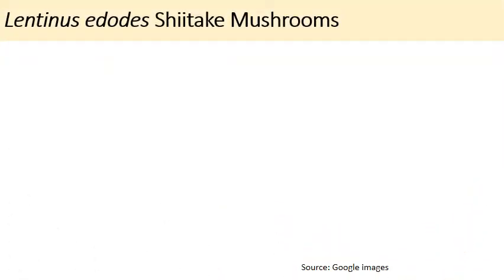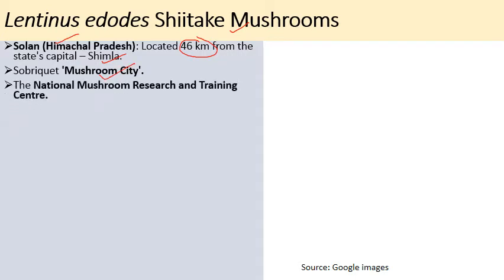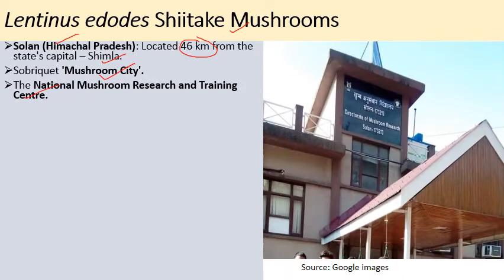The next edible mushroom is Lentinula edodes, commonly known as Shiitake mushroom. It is a very important mushroom rich in nutrients and fiber, and it is also used to help cure cancer. The Mushroom City of India is Solan in Himachal Pradesh, located 46 km from the state capital Shimla. It has the National Mushroom Research and Training Centre and the Directorate of Mushroom Research, where various quality mushrooms including Shiitake are cultivated.